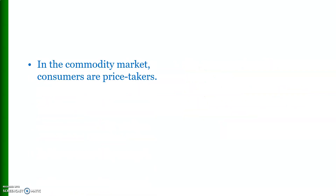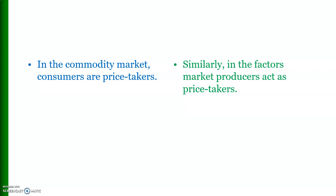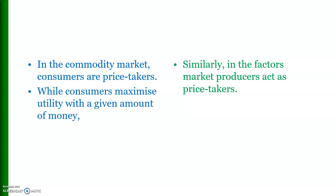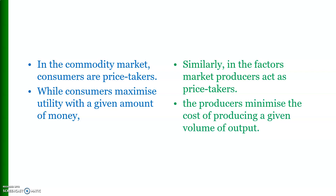In the output market, consumers are price takers, which means they cannot affect the price. Similarly, in the input market or factors market, producers are also price takers and cannot affect price.